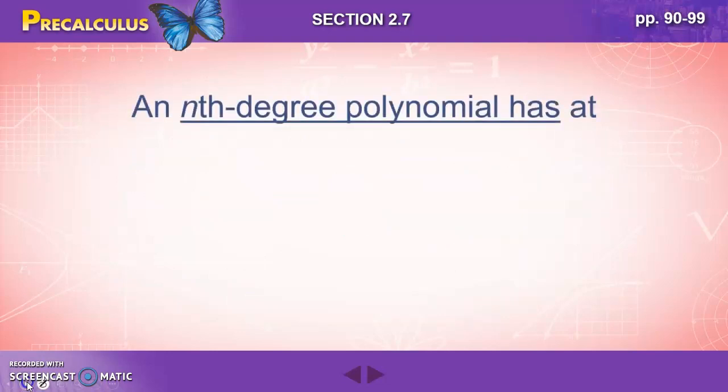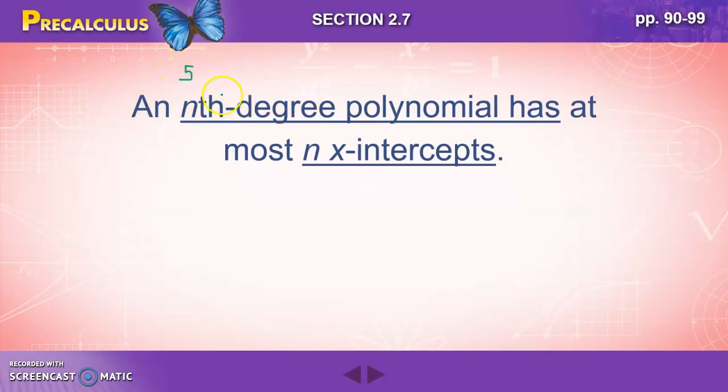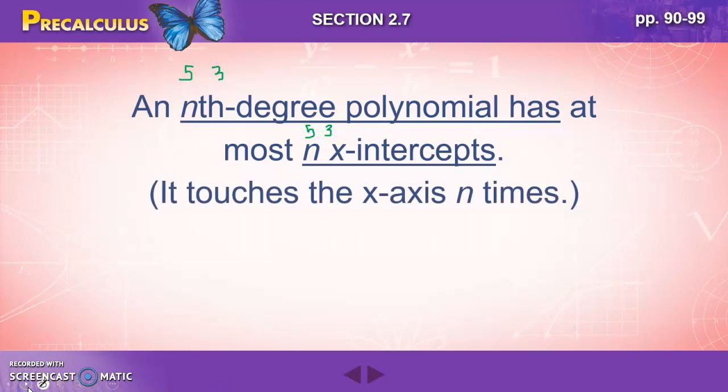An nth degree polynomial has at most n x-intercepts. So let's plug in some numbers here. If your polynomial, for example, is a fifth degree polynomial, it has at most five x-intercepts, five places where it crosses the x-axis. If it's a third degree polynomial, it has at most three x-intercepts, or places where it crosses the x-axis.